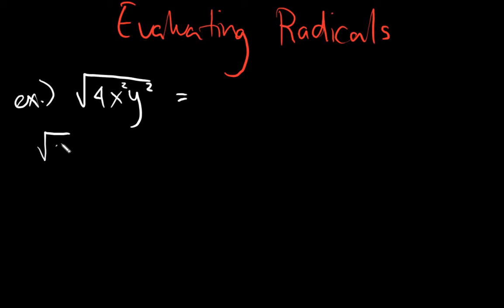In this case we have one number and two variables. So let's try to evaluate them individually. So you will get the square root of 4, you will get the square root of x squared, and then you will get the square root of y squared.